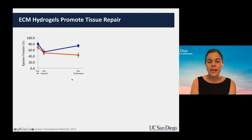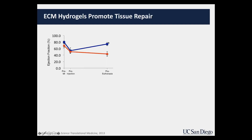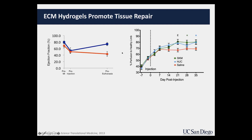In a pig heart attack model, shown here in blue, our cardiac extracellular matrix hydrogel was injected two weeks after a heart attack, with follow-up out to three months, showing significant improvements in cardiac function. We've also tested our skeletal muscle ECM hydrogel in a rat peripheral artery disease model.